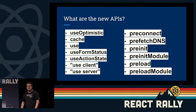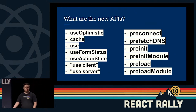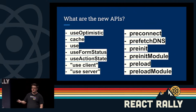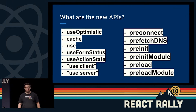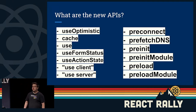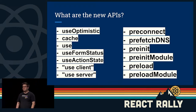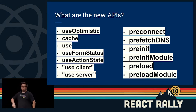Let's talk about the new APIs. There's a lot of them. There's useOptimistic, there's cache, there's the use hook — which is a little confusingly named — use form status, useActionState, the use client and use server directives, and then there's a lot of preconnect, prefetch type APIs. We'll touch on all the preconnect stuff in one slide, and then all the other stuff will get its own slides.